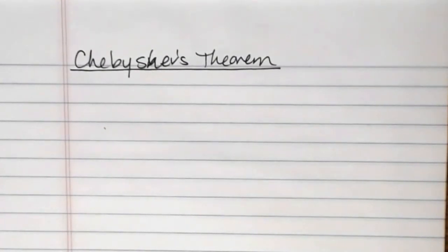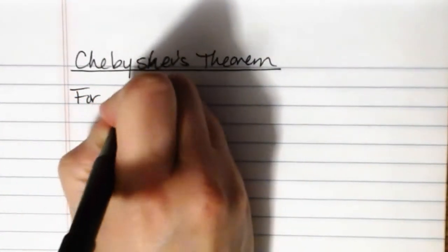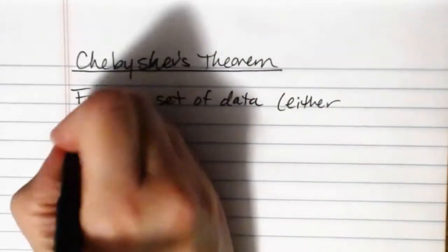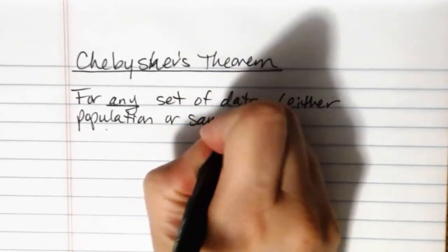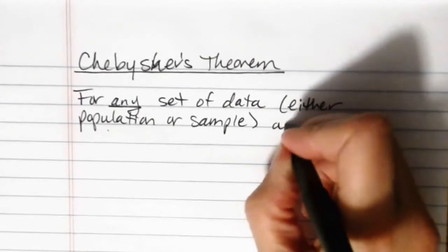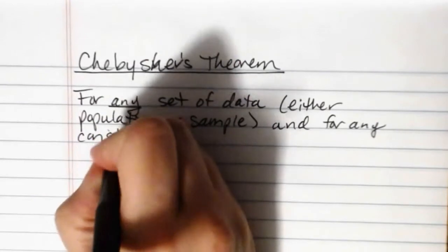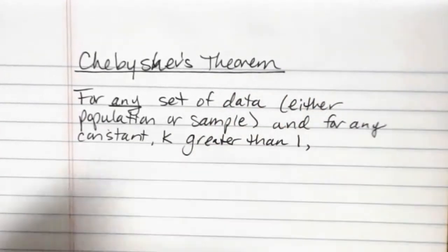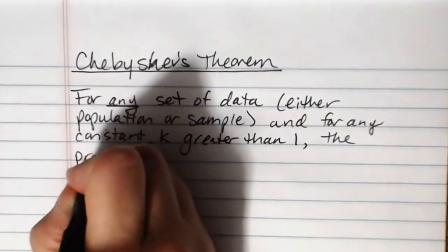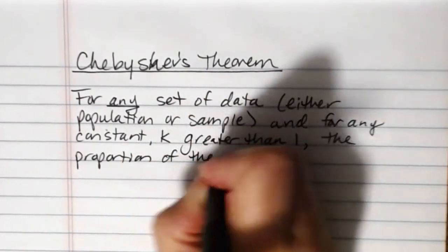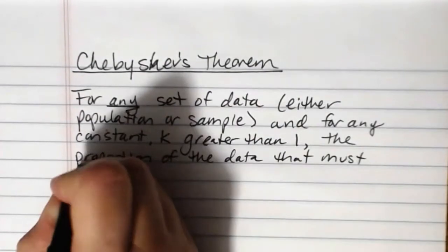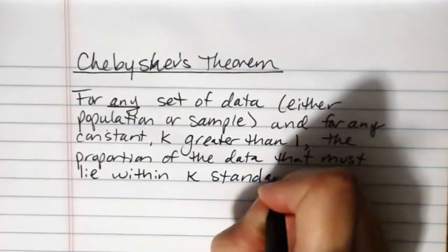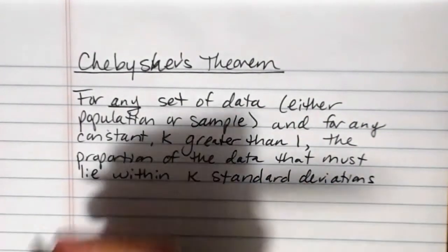So what the theorem itself actually says is, for any set of data, either population or sample, and for any constant k greater than 1, the proportion of the data that must lie within k standard deviations on either side of the mean is at least 1 minus 1 over k squared.